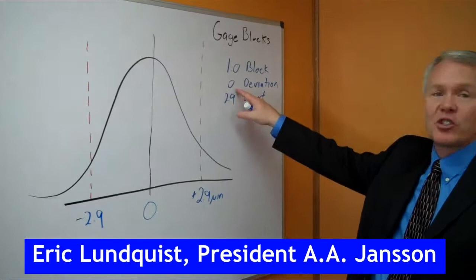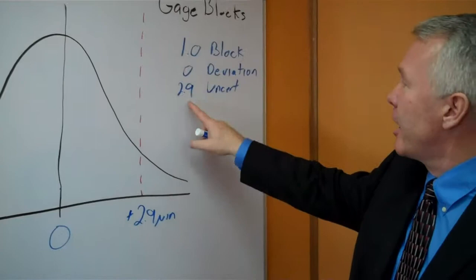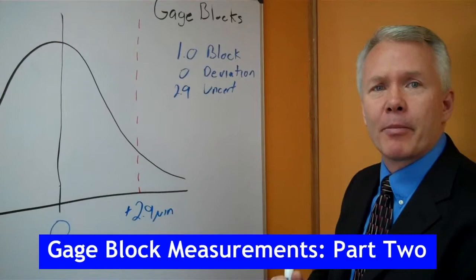To recap what we just went over, we measured a one-inch gauge block that had zero deviation, so we reported that it was exactly one inch, and we showed you how to use the formula to actually calculate that it had an uncertainty of 2.9 millionths.